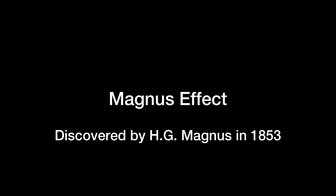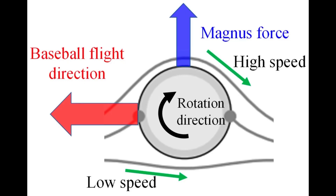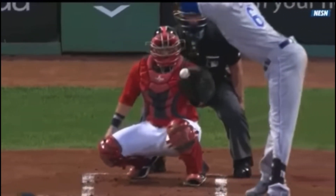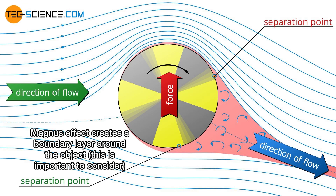Let's also talk about the Magnus effect — this is what makes a spinning ball move the way it does. However, a knuckleball has little to no spin, which basically eliminates the Magnus effect. The Magnus effect also determines the boundary layer of the object.